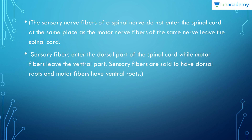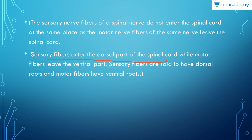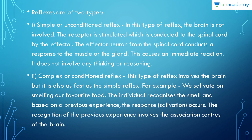The sensory nerve fibers of a spinal nerve do not enter the spinal cord at the same place as the motor neuron fibers of the same nerve leave the spinal cord. The sensory fibers enter the dorsal part of the spinal cord, while the motor fibers leave from the ventral part. We've already covered this in the structure of the spinal cord — the ventral root and the dorsal root ganglion are separate, with sensory input on the dorsal side and motor output on the ventral side.